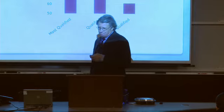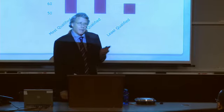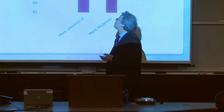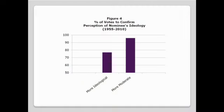A second consideration that matters to members of the Senate, not surprisingly, is ideology. As Figure 4 shows, those nominees perceived as having strongly ideological views — such as Thurgood Marshall, William Rehnquist, Clarence Thomas, Ruth Ginsburg, and Samuel Alito — received on average 77% affirmative votes, whereas those nominees perceived as having more moderate views — such as Stevens, O'Connor, Souter, and Breyer — received 96% favorable votes for confirmation.